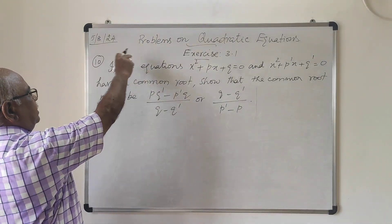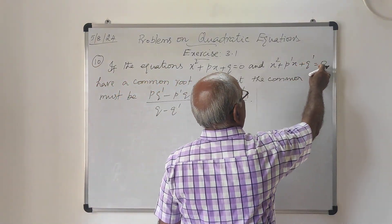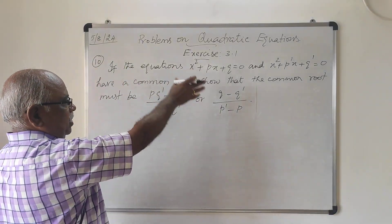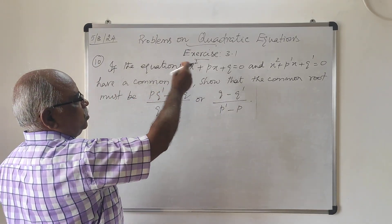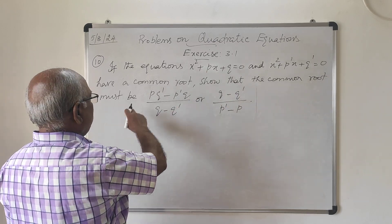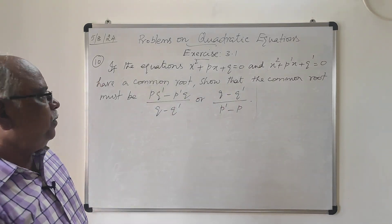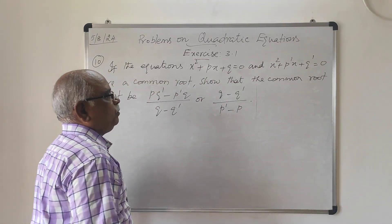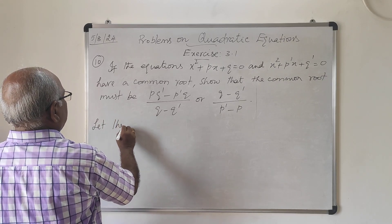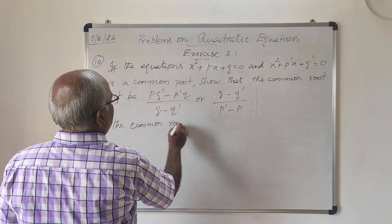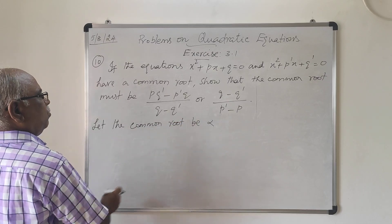Now the problem number 10 in the exercise: if the equations x² + px + q = 0 and x² + p'x + q' = 0 have a common root, then show that the common root is either (pq' − p'q)/(q − q') or (q − q')/(p' − p). We consider the common root to be alpha.